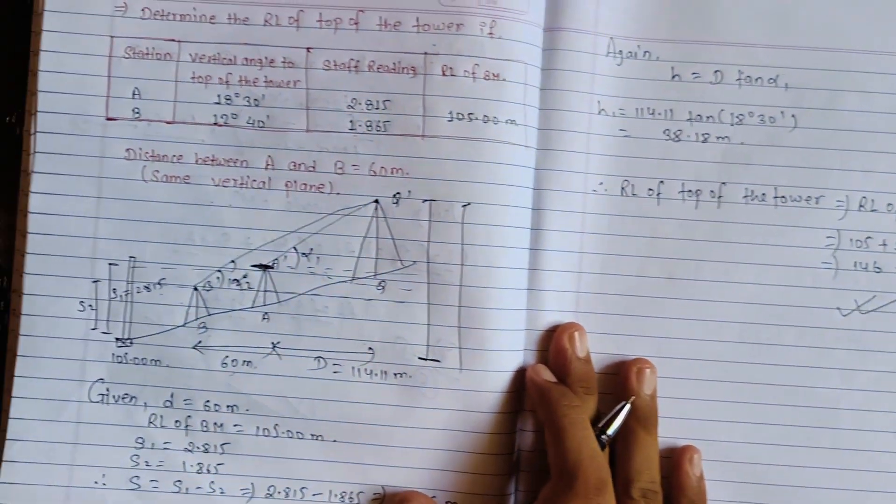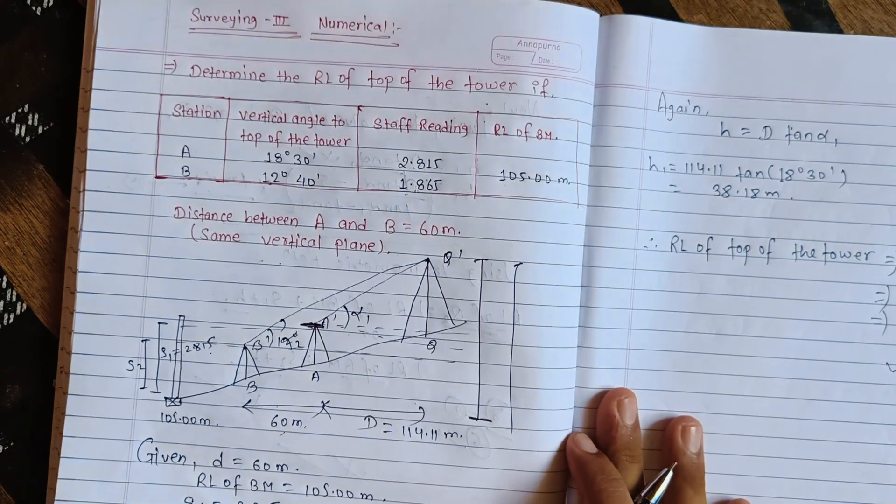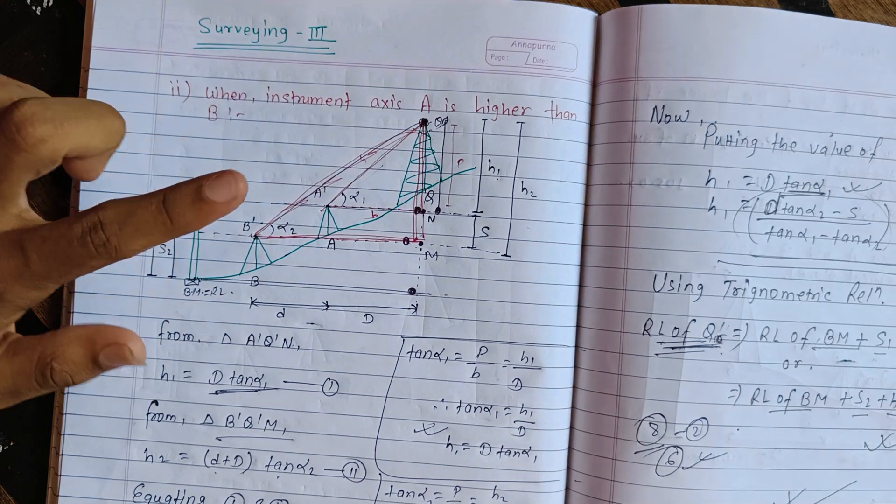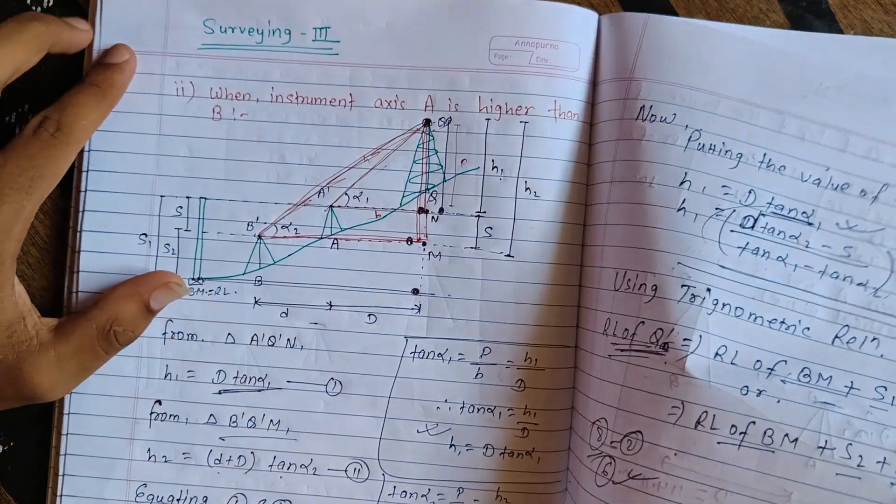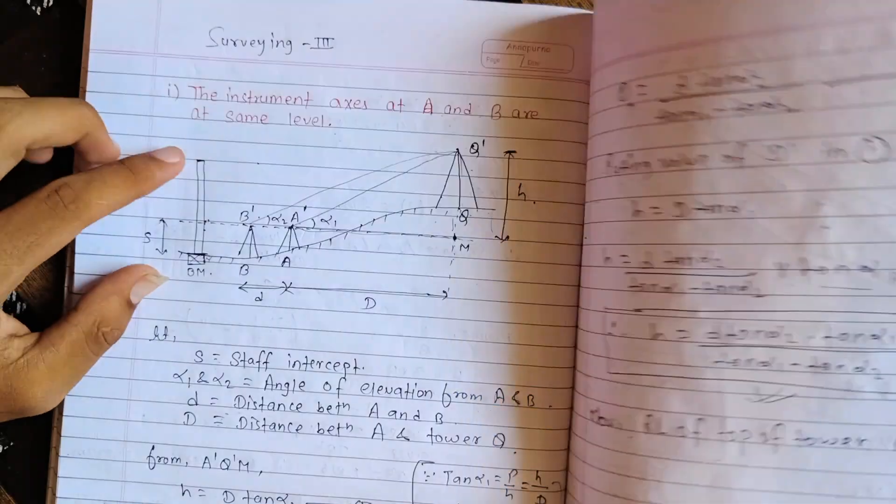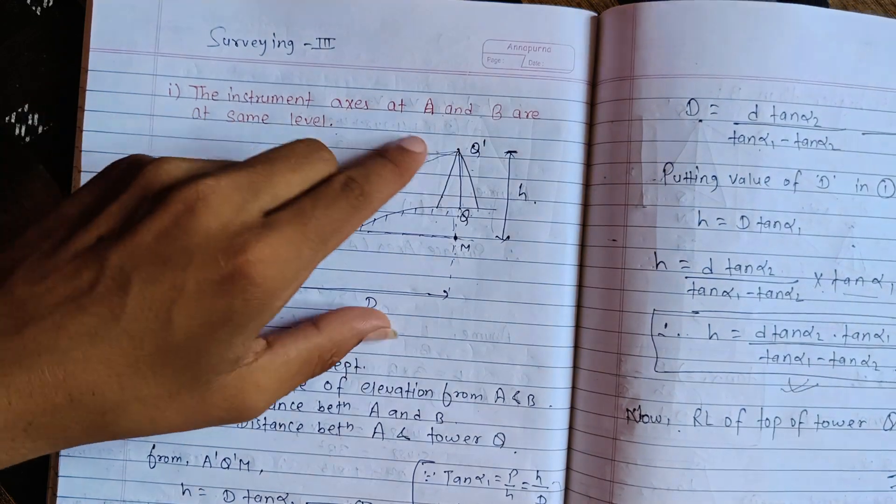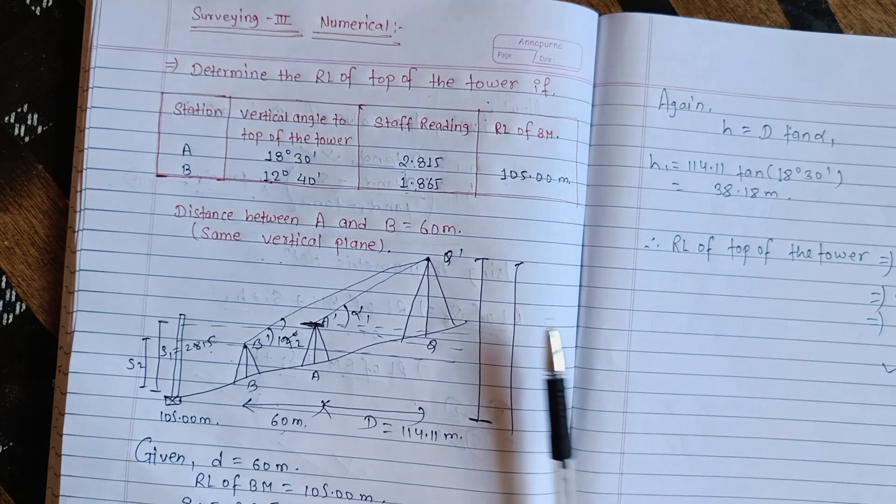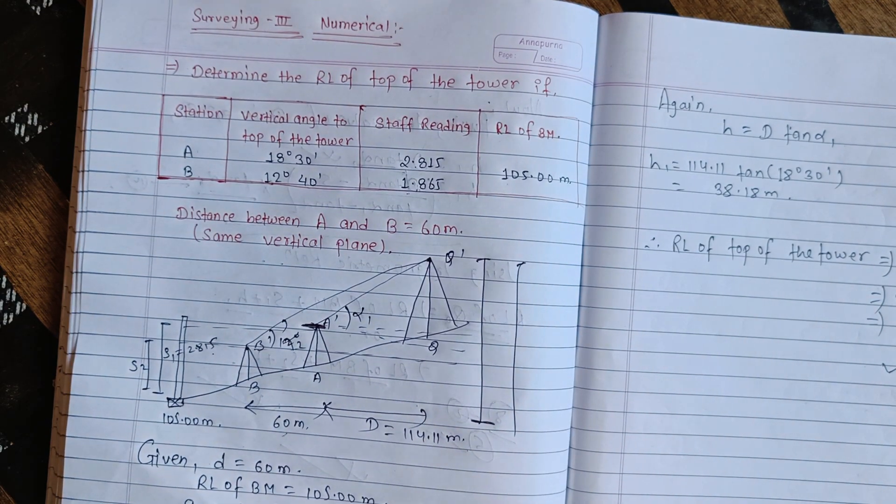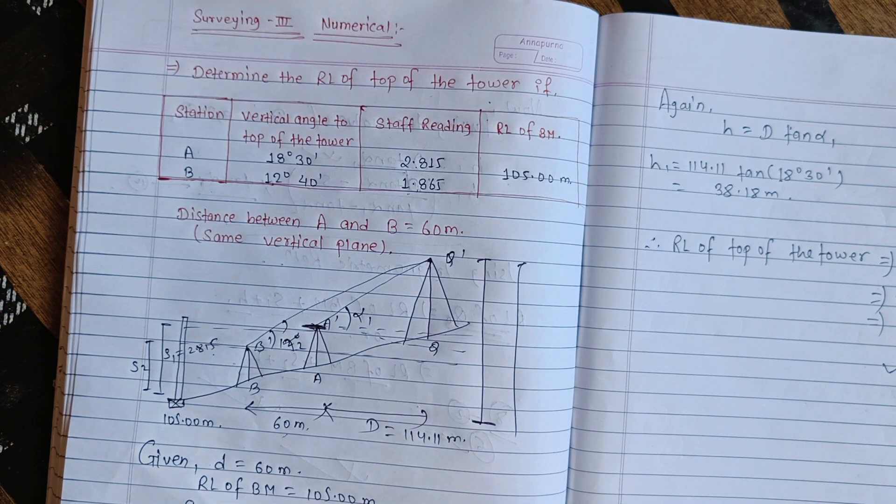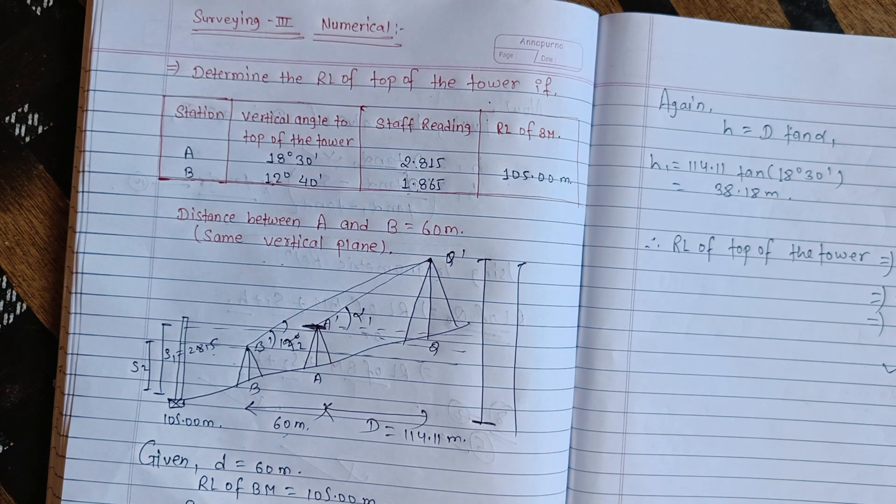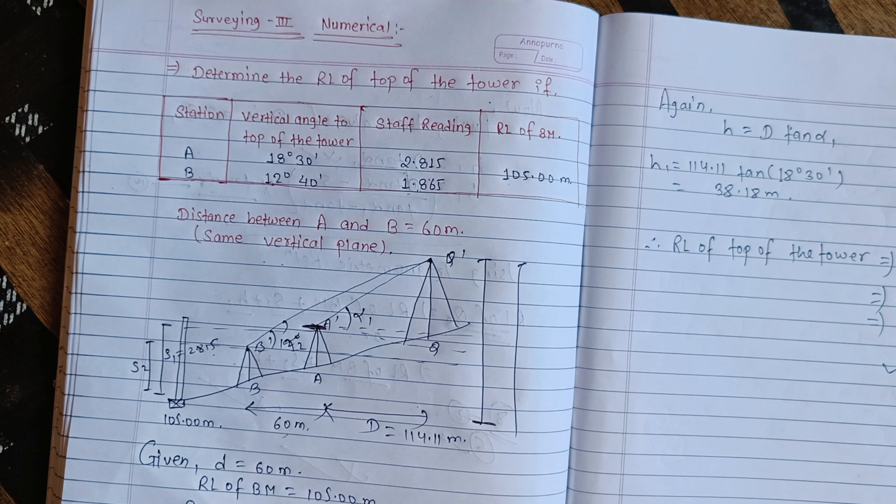The question was about A and B at same level in a numerical problem. The derivation shows how to solve this easily. If there's any error, please comment below. Thanks for watching. Like the video and subscribe. Goodbye and take care.